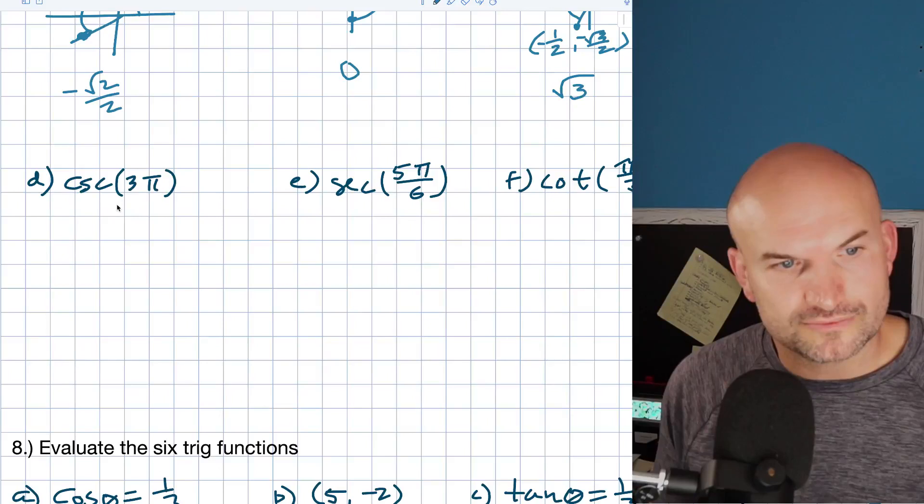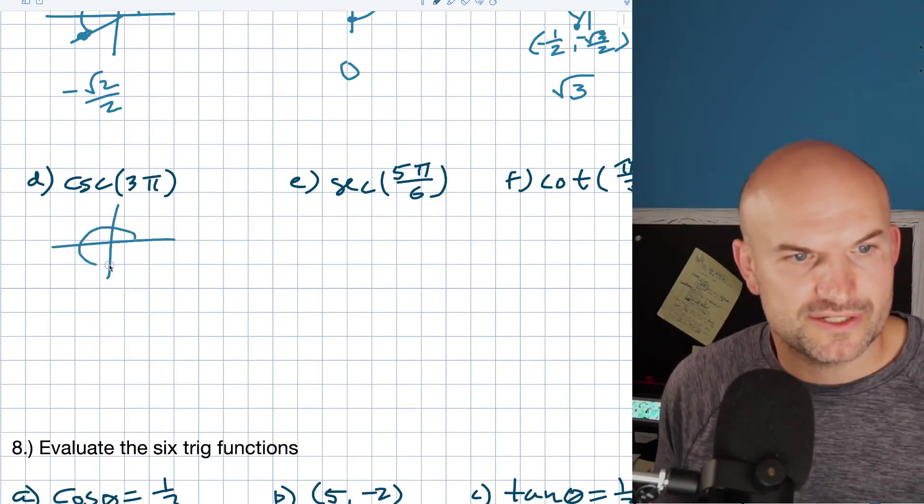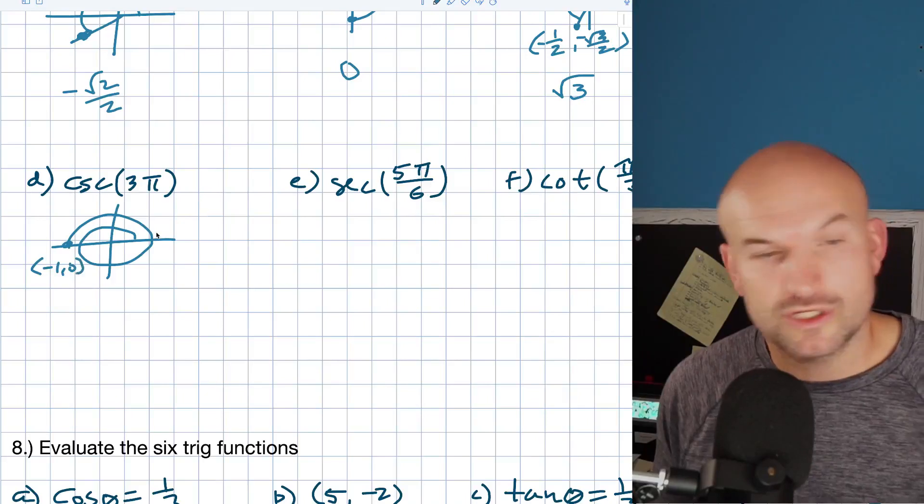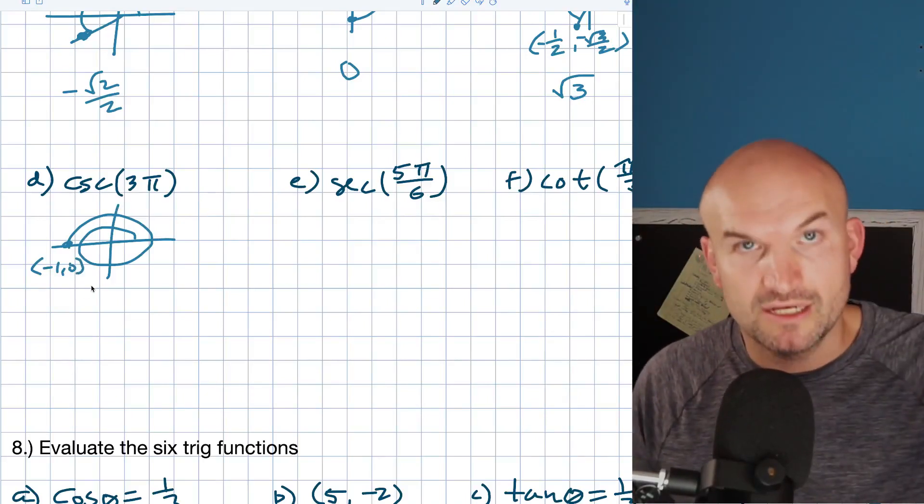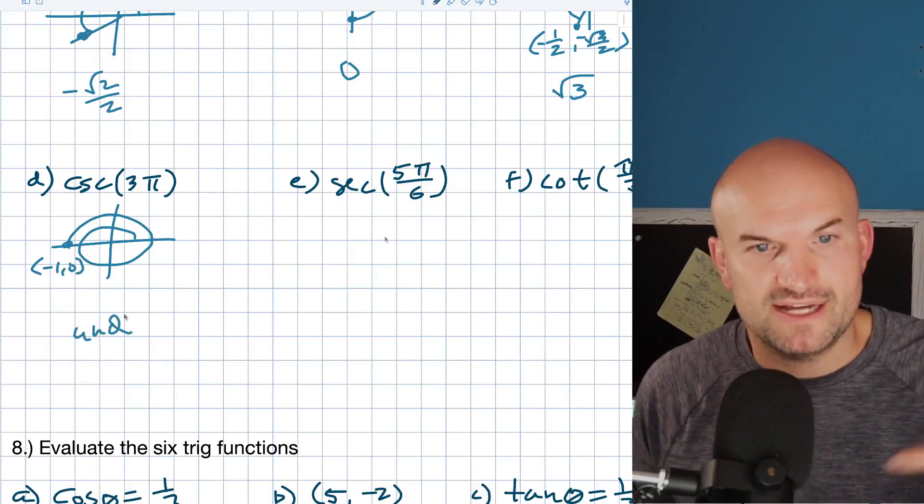Cosecant of 3π. Let's see, where's 3π? So, here's 2π. 3π. It's going to be negative 1, 0. Cosecant is going to be 1 over y, which is going to be undefined.